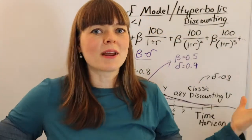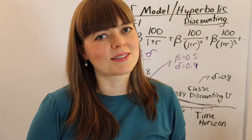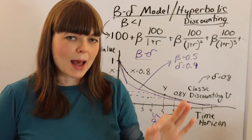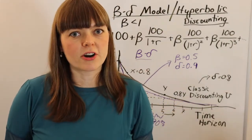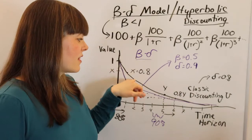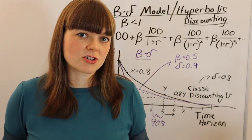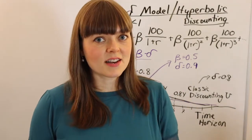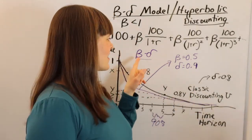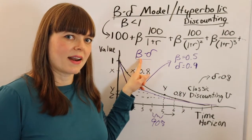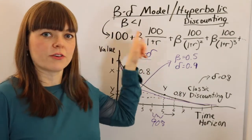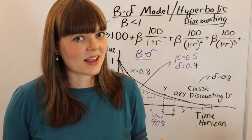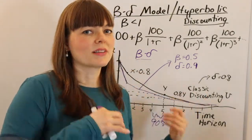That's so human — humans actually do make choices that we regret. The beta-delta model is going to capture that much better. The classic discounting utility model cannot capture time inconsistency; it cannot capture regret in your decision making. By just adding this one extra tool — a beta, which is a haze over the future — this term adds a lot of new powerful insights into human behavior that we can build into our models.